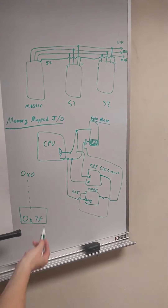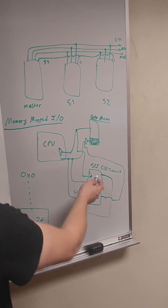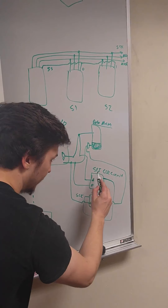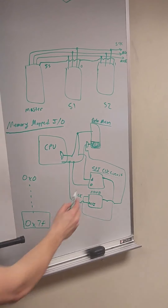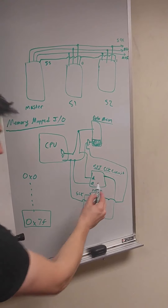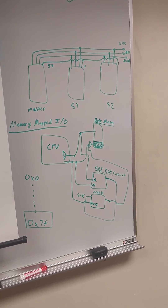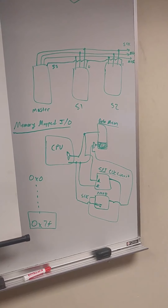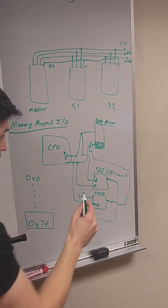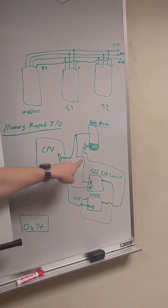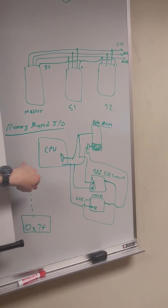For example, you could say address 69 — or some specific address — is configured to set the clock speed for that SPI peripheral. You design the circuit so that when it receives that address as input along with a data value, it interprets the address as meaning 'set the clock speed,' and the data value tells it by how much.